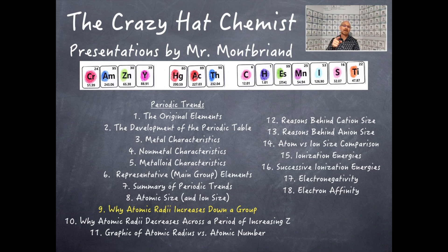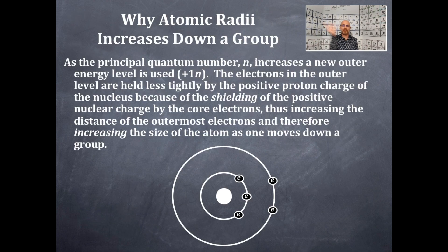Welcome to the Crazy Hat Chemist. Here's another video on periodic trends. The question is: why does the atomic radii increase going down a group?